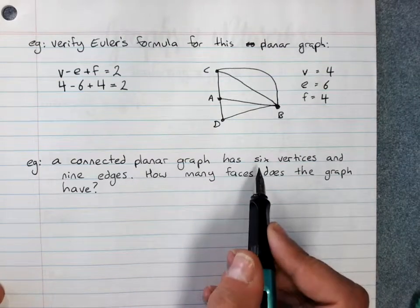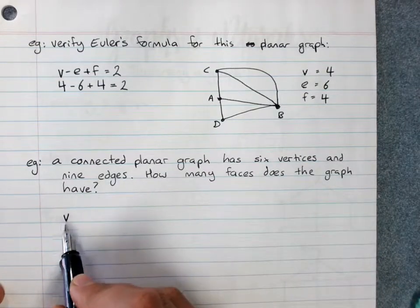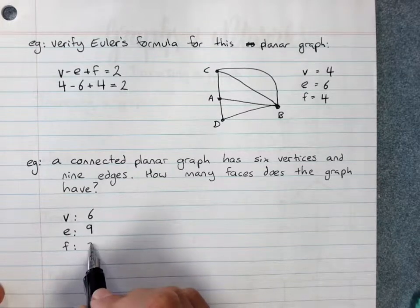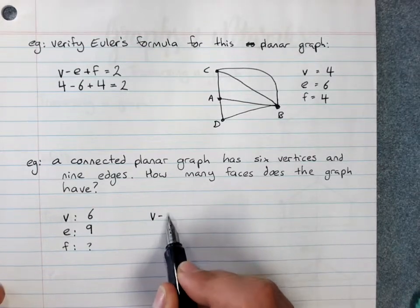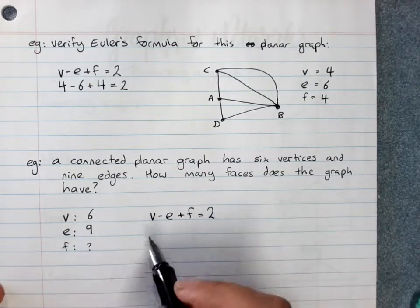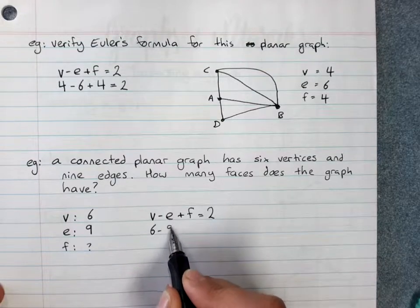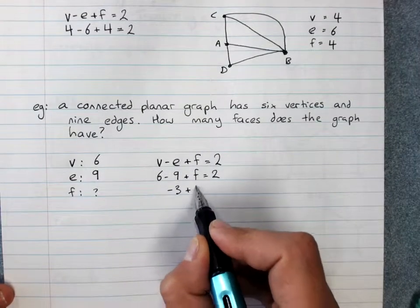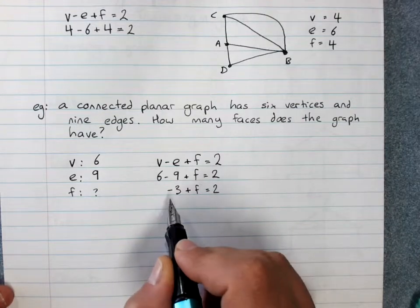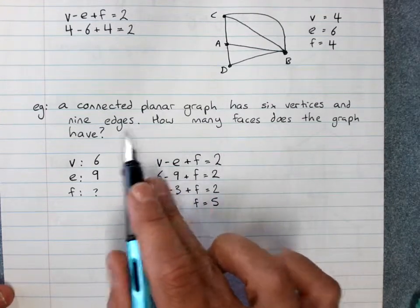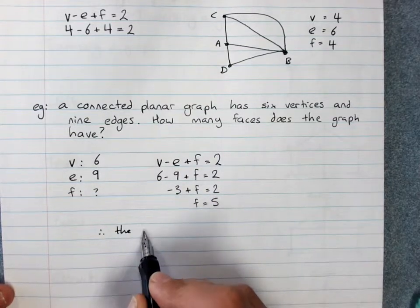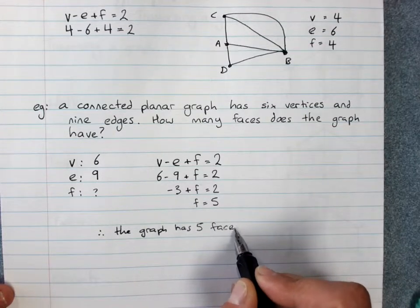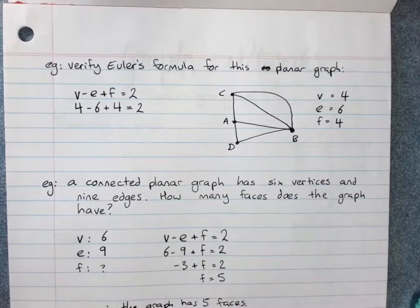So a connected planar graph has 6 vertices and 9 edges. How many faces does the graph have? Write vertices, edges and faces. 6 vertices, 9 edges, faces is unknown. Write our formula: V minus E plus F equals 2. Substitute the values we know: 6 minus 9 plus F is 2. And we've got an equation that we can simplify. 6 minus 9 is negative 3 plus F is 2. To get F on its own, add 3 to both sides. F equals 5. Therefore, the graph has 5 faces. So this is some uses of Euler's formula.